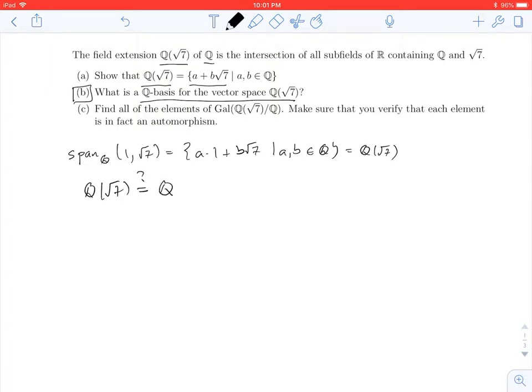So this would happen if the dimension, the Q dimension of Q adjoin the square root of 7, or as we have written it in class, the degree of this field extension. So if this was equal to 1, then Q adjoin the square root of 7 would equal Q.